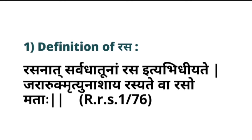Rung Mrityunashaya Rasyatevarusomata — because it does the Shaman of Jarah, preventing old age complications. Ruk — it clears off any kind of severe disorders. Vrityunashaya — by promoting health, it delays death of a person. That's why it is called Rasa.